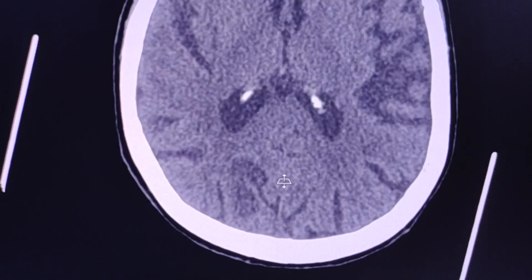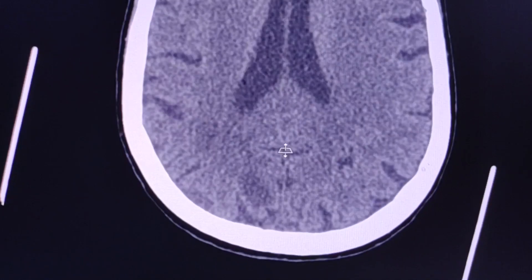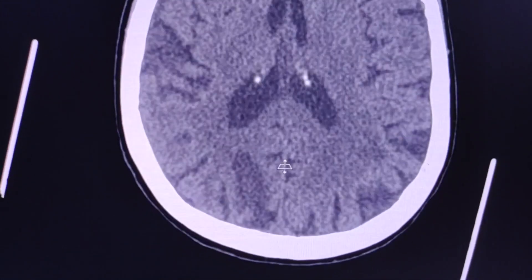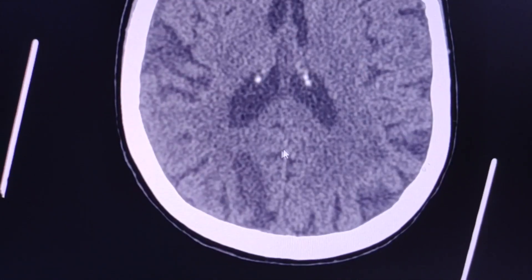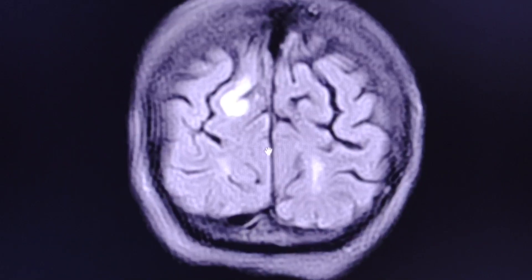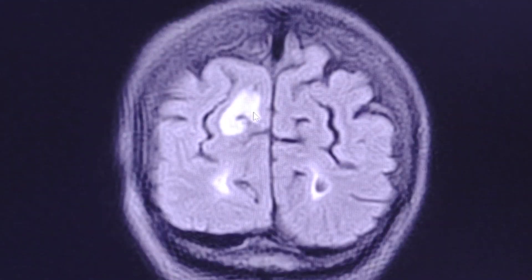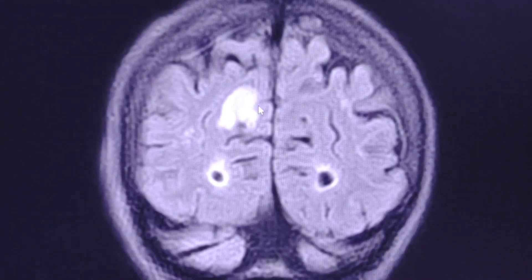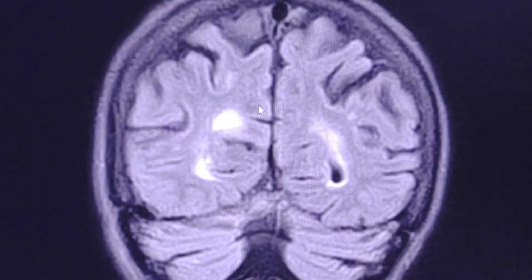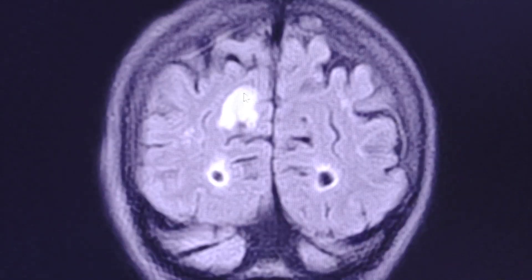I will show you the MRI scan which was performed the next day. This is the T2 FLAIR. Only the coronal view is available, and as you can see there is a focal lesion with high signal intensity.